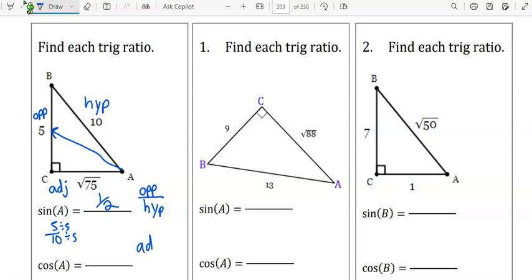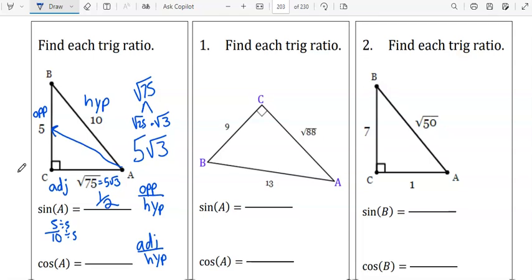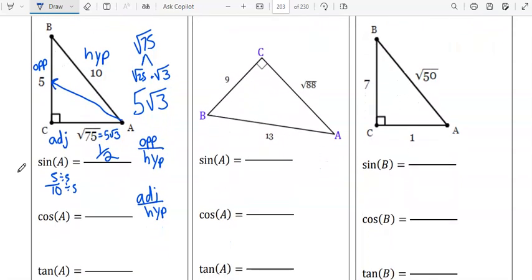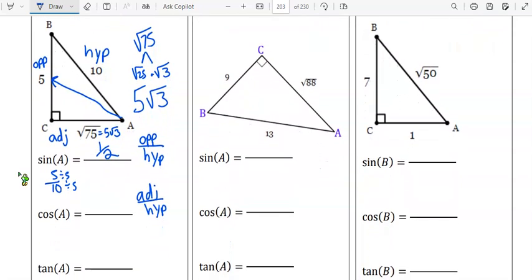Cosine is adjacent over hypotenuse. The square root of 75 can be broken down into the square root of 25 times the square root of 3, also known as 5 square root 3. Instead of writing the square root of 75, we're going to write 5 square root of 3. That's 5 square root of 3 over hypotenuse 10. If I divide each of those by 5 to simplify, you get square root of 3 over 2.